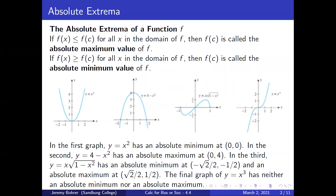In the first graph, y = x² has an absolute minimum at (0, 0). In the second, y = 4 - x² has an absolute maximum at (0, 4).